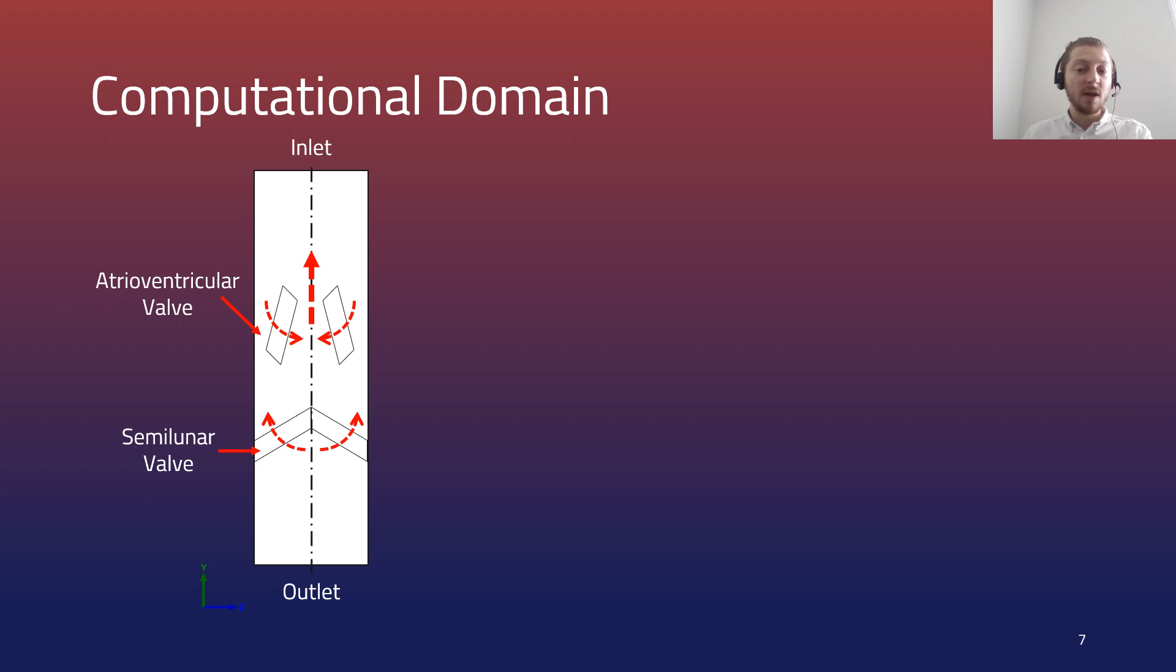The boundary conditions represented the left side of the heart outlet where the inlet was a constant 15 millimeters of mercury back pressure boundary and the outlet was represented using a two element windkessel model operating around 90 millimeters of mercury.